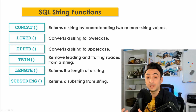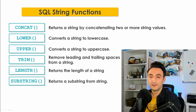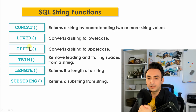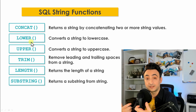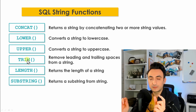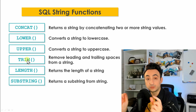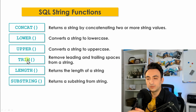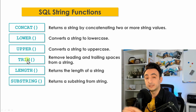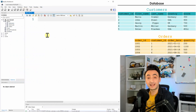In SQL we have the following string functions: CONCAT, in order to connect two strings into one value; LOWER and UPPER, in order to transfer data to lowercase or uppercase; TRIM, if you have white spaces at the start or end of a value you can remove them; LENGTH, in order to calculate the length of a value; and SUBSTRING, in order to return a sub-part of a string.